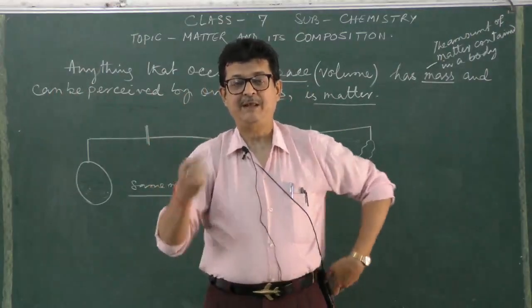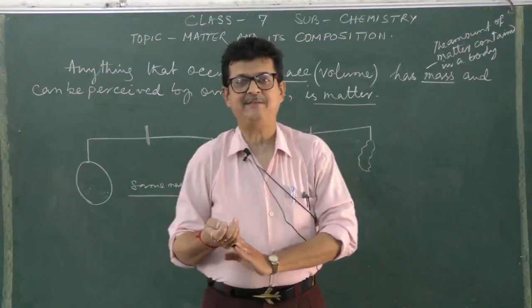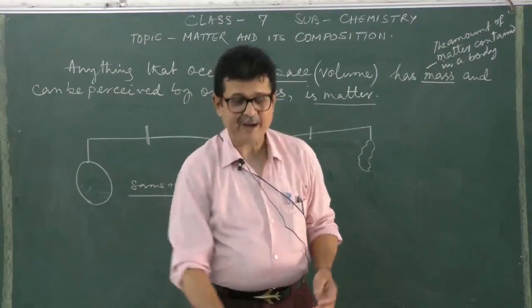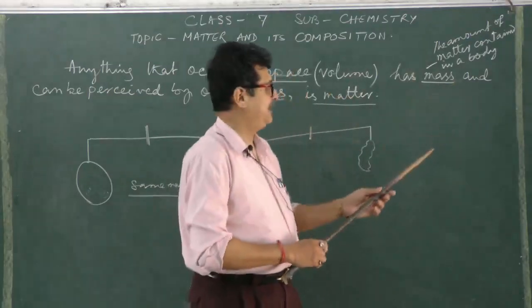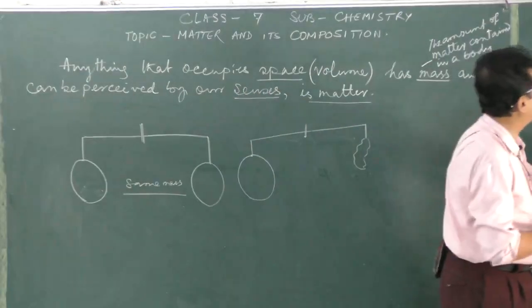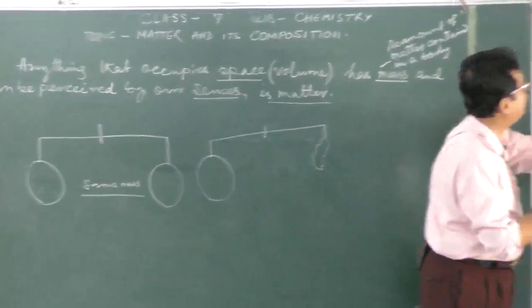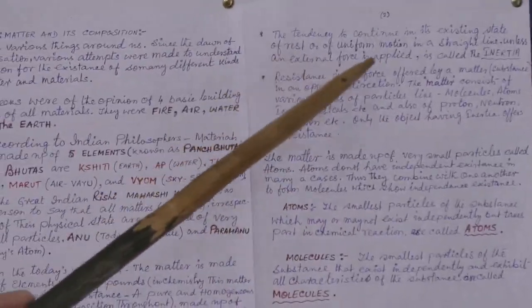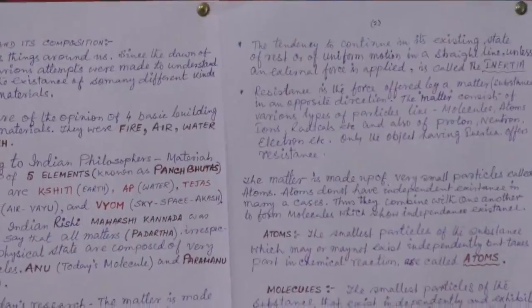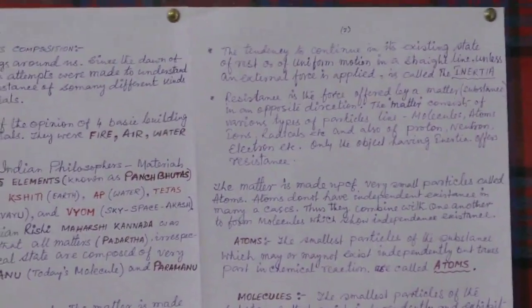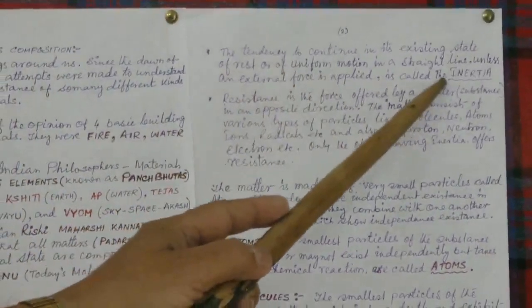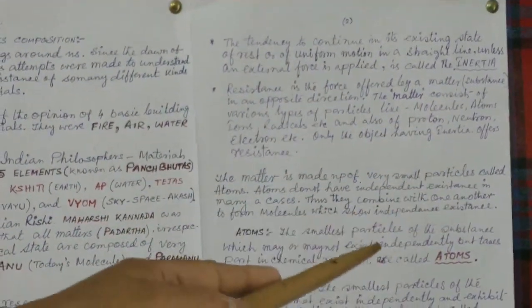Besides these two, there are two more features we see for matter. One is, matters have inertia and matters occupy space. Inertia, we call it, there is a tendency of the matter to continue with the existing state, state of rest or state of motion, state of rest or state of uniform motion in a straight line, until there is an external force applying on it. It will maintain its physical state. And hence we call it inertia. It is shown by a matter.